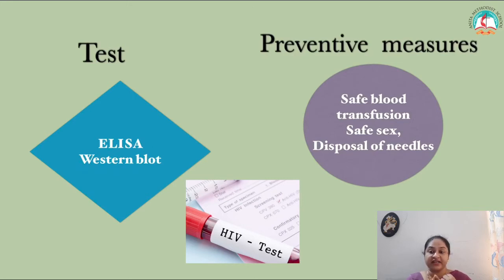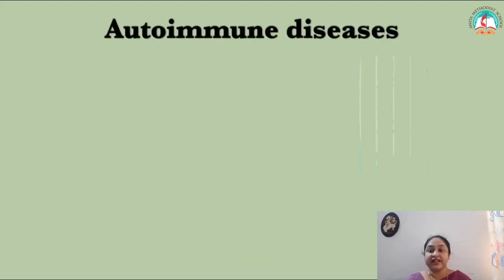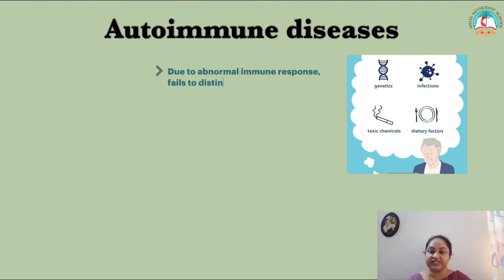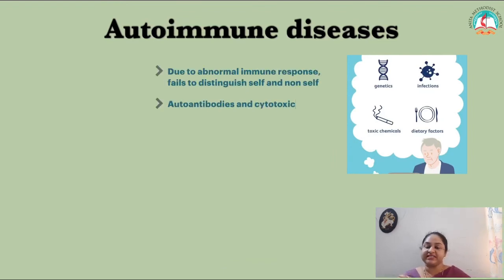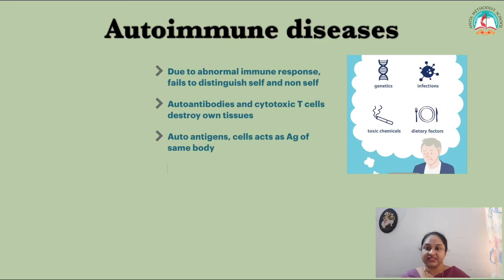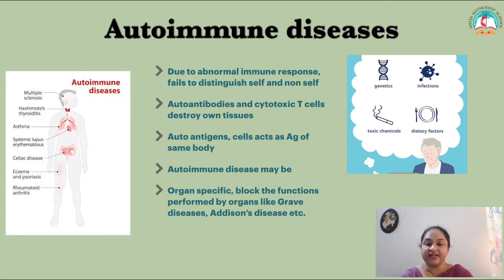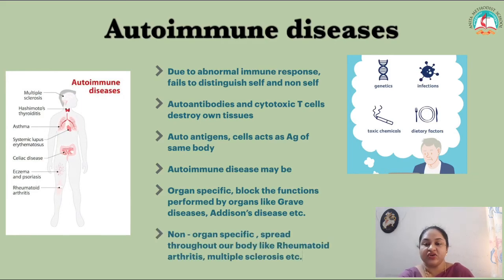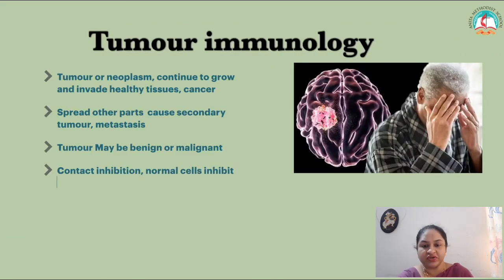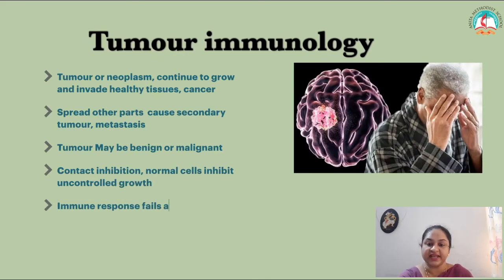Autoimmune diseases occur due to an abnormal immune response that fails to distinguish self from non-self. Antibodies and cytotoxic T-cells destroy the body's own tissues, and autoantigens act as antigens of the same body. We then learned about tumor immunology — tumors or neoplasms continue to grow and invade healthy cells, as seen in cancer.